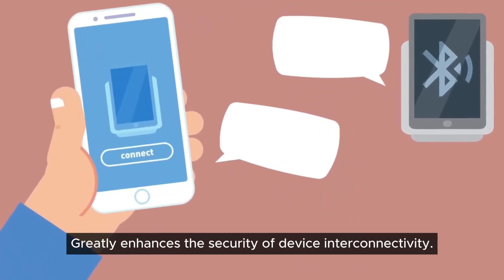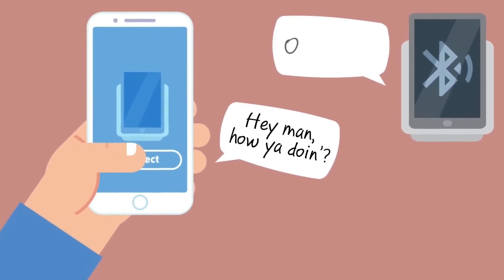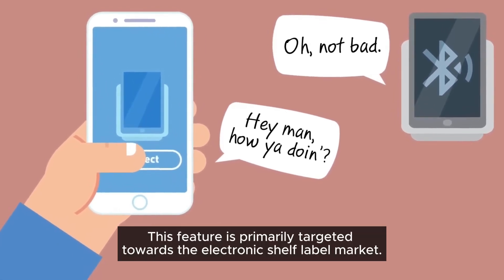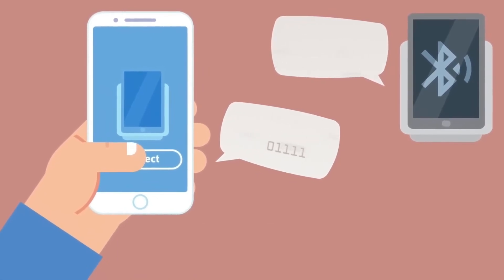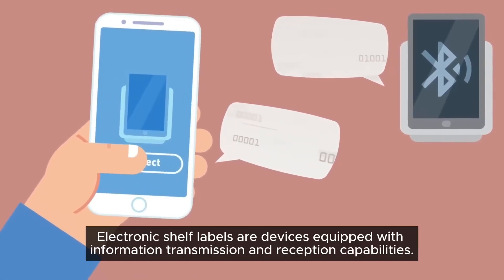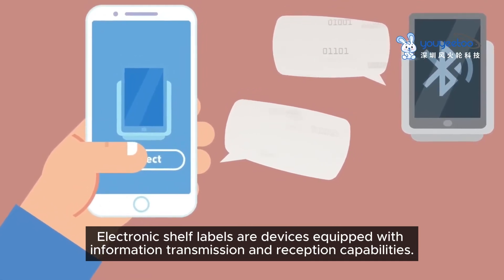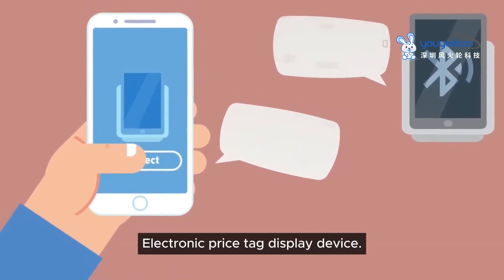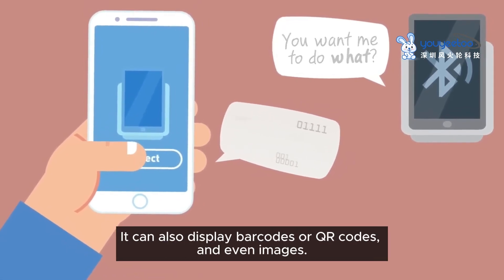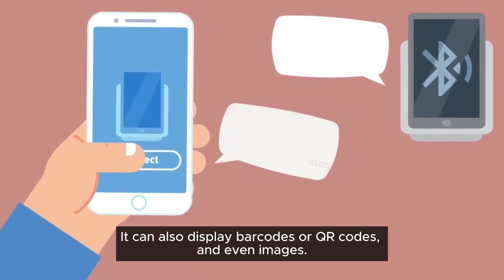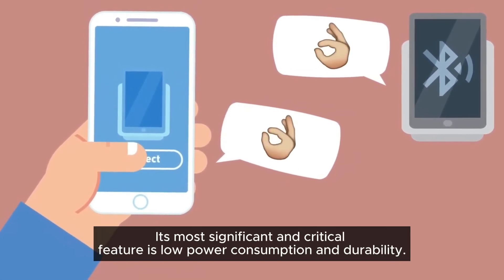Encrypting shared data greatly enhances the security of device interconnectivity. The LE-AT security level specification is primarily targeted towards the electronic shelf label market. Electronic shelf labels are devices equipped with information transmission and reception capabilities — essentially electronic price tag display devices that can display product information and pricing.